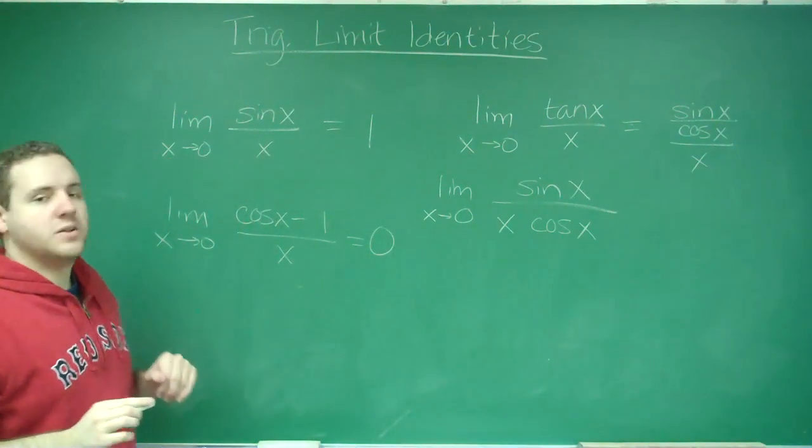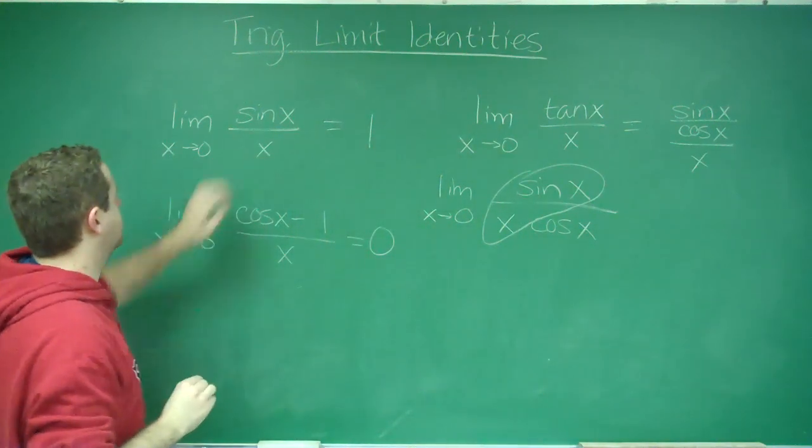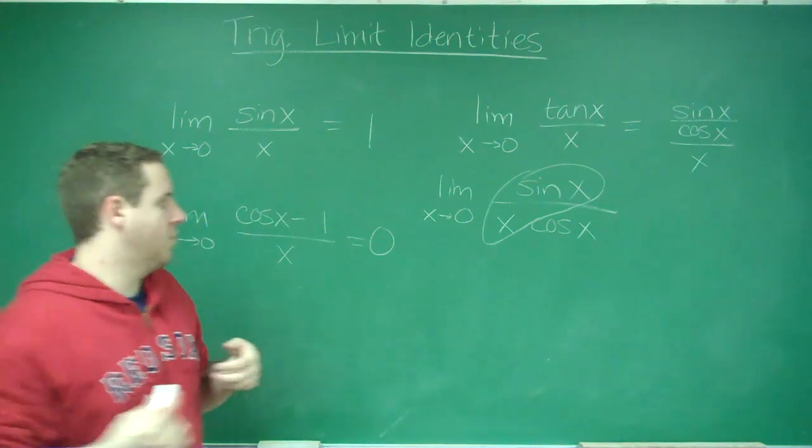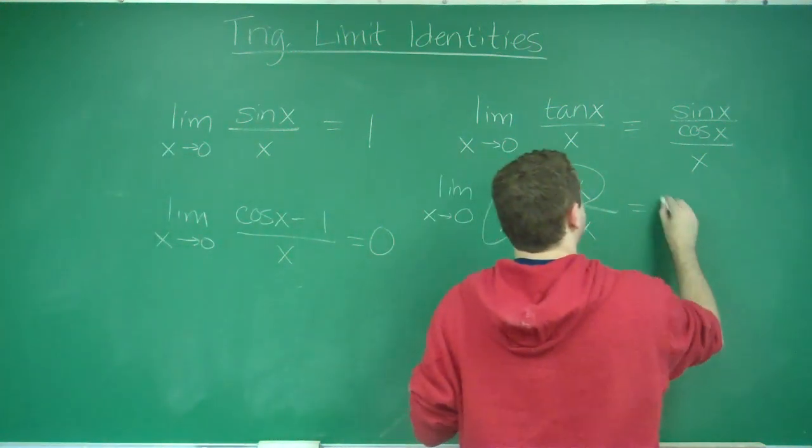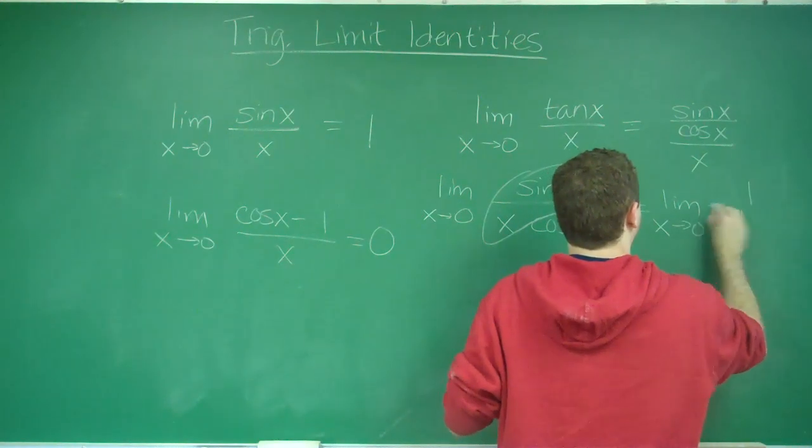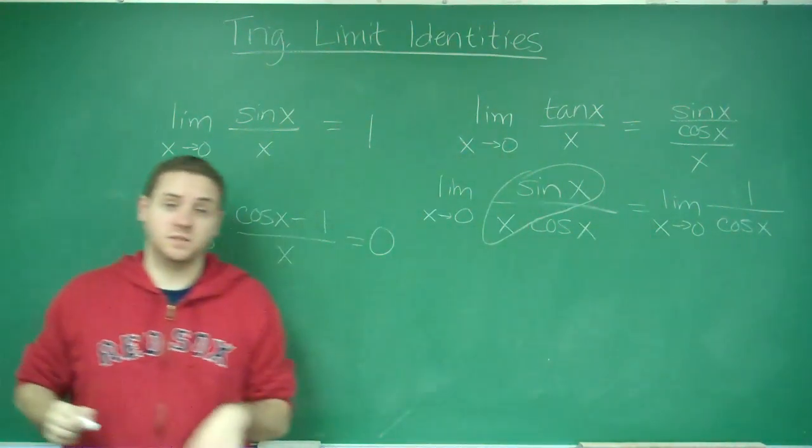You can see here that now we have sine x over x. And we know that sine x over x, that limit is just 1. So, we can replace that with 1. And this is the same as the limit of 1 over cosine x, because that's all that's remaining in the function.